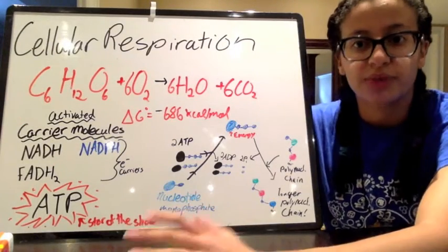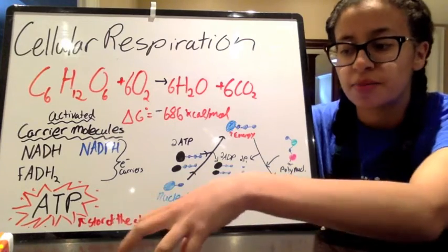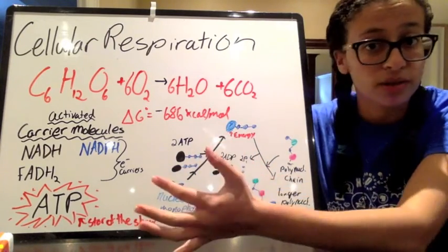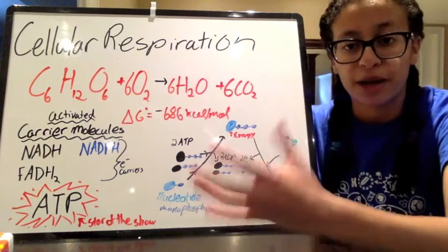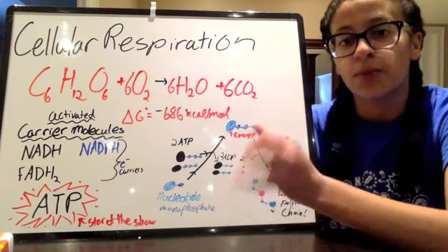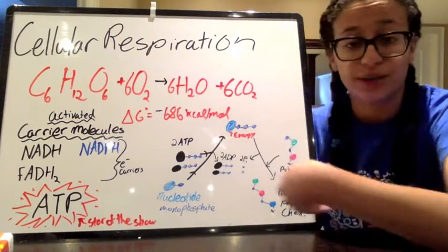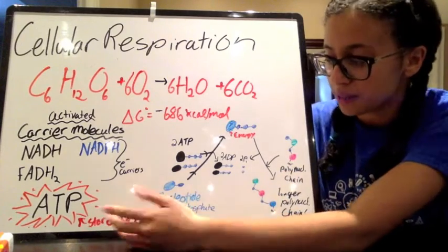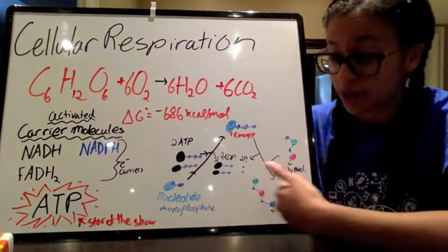Now how is that important? What can you do with that? Remember how we said that anabolic reactions, where you're taking small parts and combining together to make a polymer or just a larger macromolecule, those are endergonic so they require energy. So if we have energy that we can use in cells in the form of ATP, we can actually make a polymer.